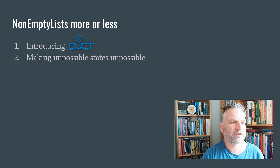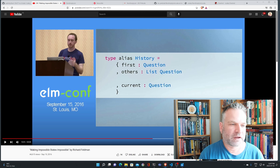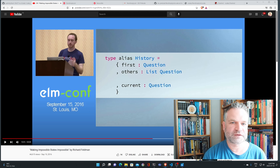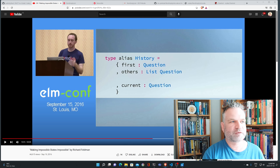The next thing I'd like to talk about is making impossible states impossible. That wording comes from Richard Feldman, a functional programmer who gave a great talk at ElmConf in 2016. The talk is about constraining your data type to represent a more specific thing about your model. In his example, a user has answered a list of questions and needs to move forward and backwards. He splits the history into a "first" element and "others" so the code never has to accommodate an empty history. His quote is: "if something is impossible, why should we represent it?"